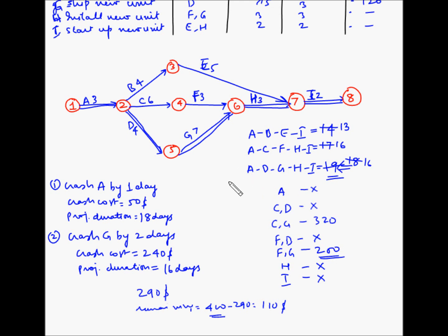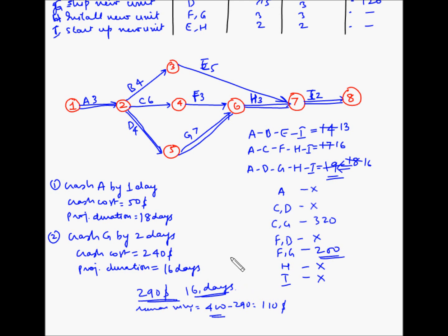So the total cost incurred is $290 and the minimum project duration achievable within the $400 budget is 16 days. This is the maximum expediting possible for this project given the manager's budget constraint.